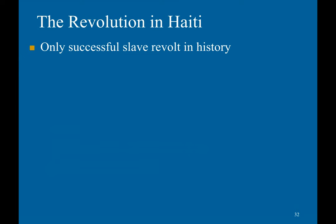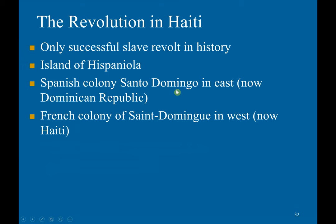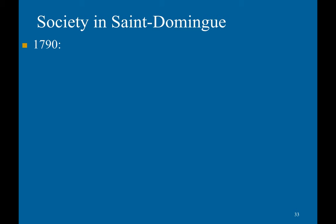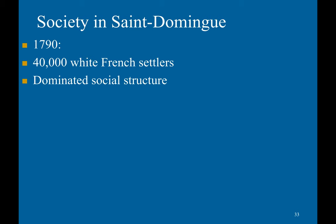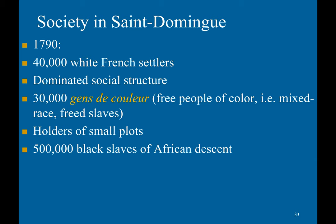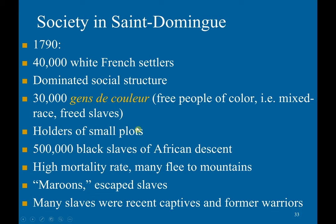The Haitian Revolution was the only successful slave revolt in history. It occurred on the island of Hispaniola, which comprises the Spanish colony of Santo Domingo in the east — now the Dominican Republic — and the French colony of Saint-Domingue in the west, now Haiti. It was a rich Caribbean colony relying on sugar, coffee, and cotton, comprising almost one third of France's total foreign trade. In 1790, there were 40,000 white French settlers dominating the social structure, below them 40,000 gens de couleur — free people of color — and below them 500,000 black slaves of African descent, who had a high mortality rate. Many slaves were recently captured former warriors, as the slave population couldn't sustain itself through natural reproduction.